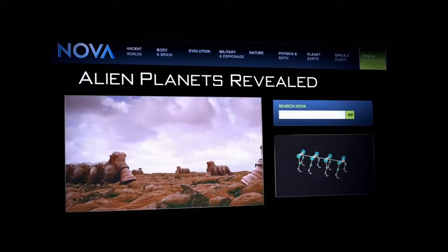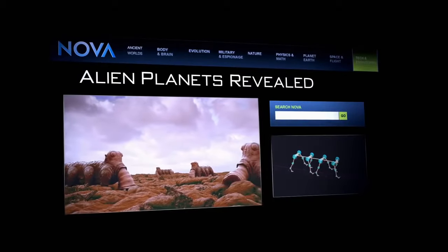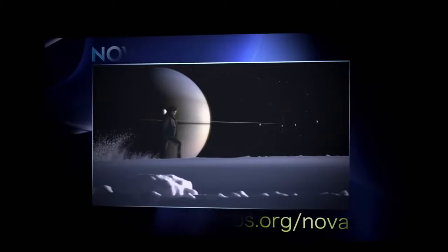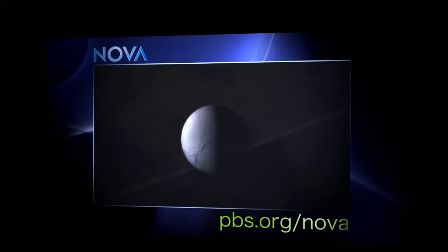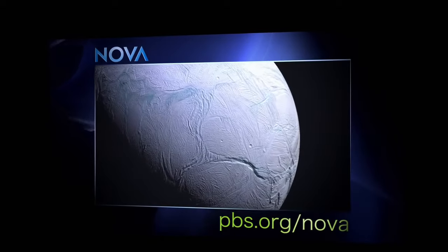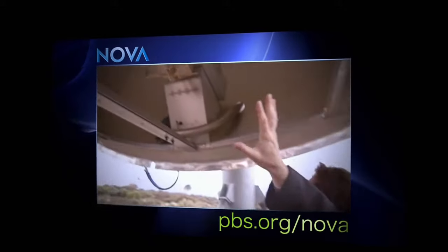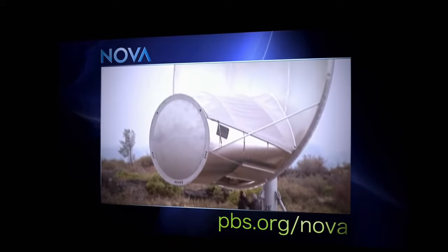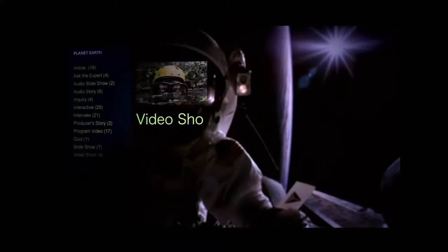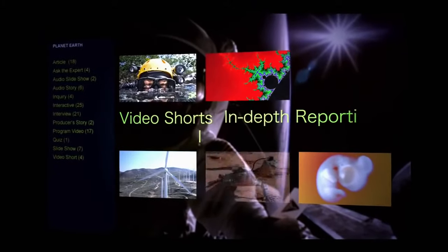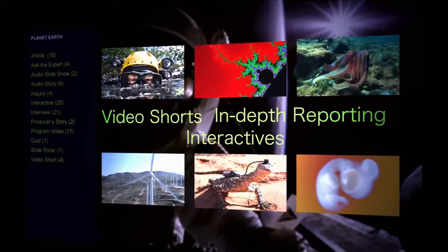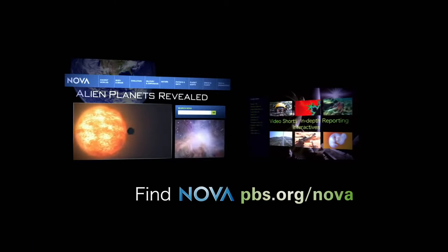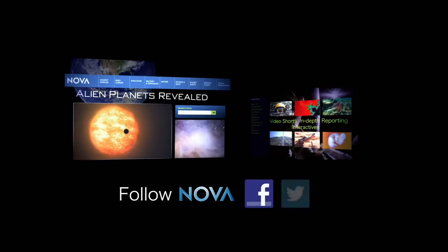The exploration continues on NOVA's website. Could there be extraterrestrial life in our own solar system? Planetary scientist Carolyn Porco thinks a tiny moon of Saturn's may be the best place to look. And meet Seth Shostak, a SETI astronomer who uses radio telescopes to listen for communications from outer space. Watch original video shorts, explore in-depth reporting, and dive into interactives. Find us at pbs.org/nova. Follow us on Facebook and Twitter.